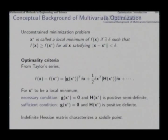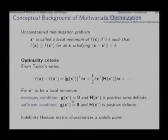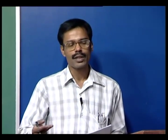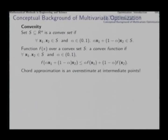First and second order optimality conditions can only be applied when the function is first and second order differentiable respectively. With these criteria, the most important concept for multivariate optimization is convexity. There are two aspects: a convex set (convex domain) and a convex function. In n-dimensional real space R^n, a set S is called convex if for every pair of points belonging to it, the entire straight line segment joining them also lies within the set.